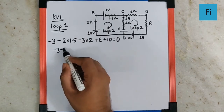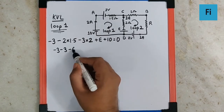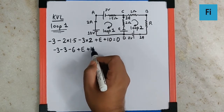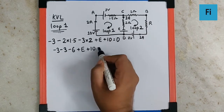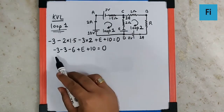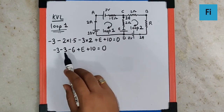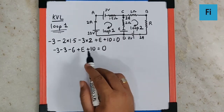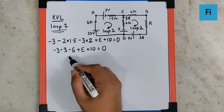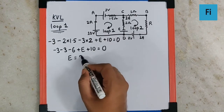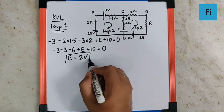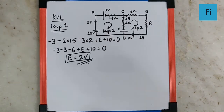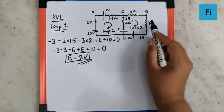Setting the total equal to zero: minus 3 minus 3 minus 6 plus E plus 10 = 0. This gives minus 12 plus 10 plus E = 0, so minus 2 plus E = 0, therefore EMF E equals 2 volts.